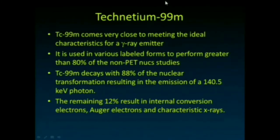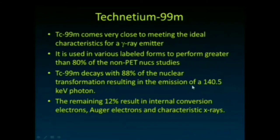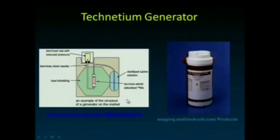Technetium-99m comes very close to many of these ideal properties, which is why it's used in various labeled forms for greater than 80% of non-PET nuclear medicine studies. It decays with 88% of its nuclear transformations resulting in emission of a 140 keV photon — about 140.5 to 141 keV — which escapes the body well and is still low enough energy that we can stop it fairly readily with our detector. The remaining 12% results in energetic electrons depositing dose in the patient, but that's a relatively small amount, and extensive chemistry has been developed around technetium as a result.